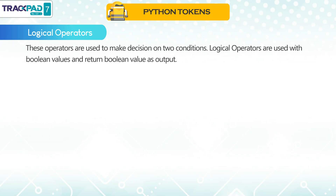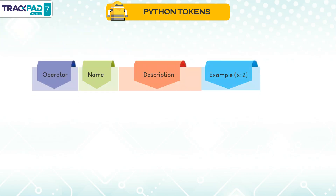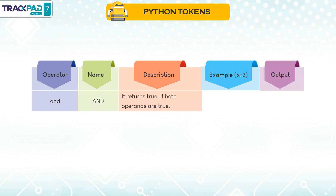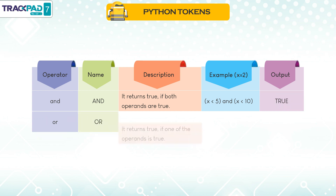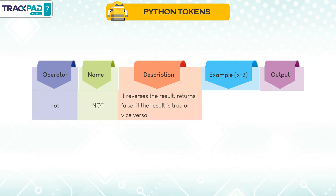Logical Operators. These operators are used to make decisions on two conditions and are used with Boolean values, returning a Boolean output. When x = 2: 'and' returns True if both operands are true — x < 5 and x < 10 is True; 'or' returns True if one of the operands is true — x < 5 or x < 2 is True; 'not' reverses the result, returning False if the result is True — not(x < 5 and x < 10) is False.